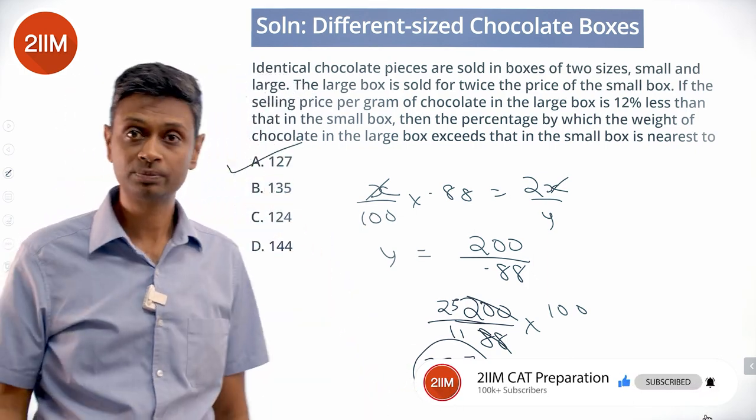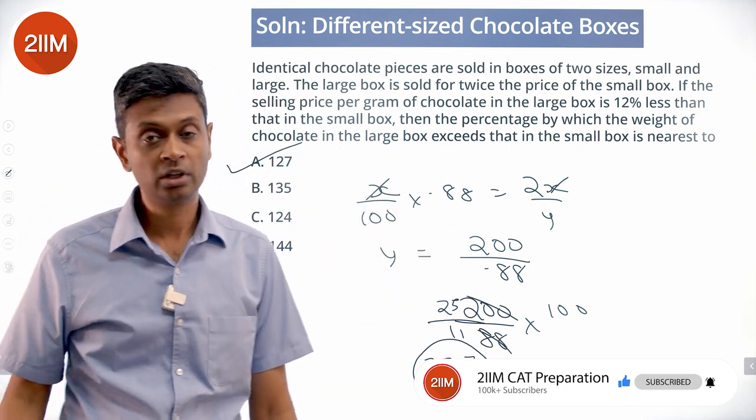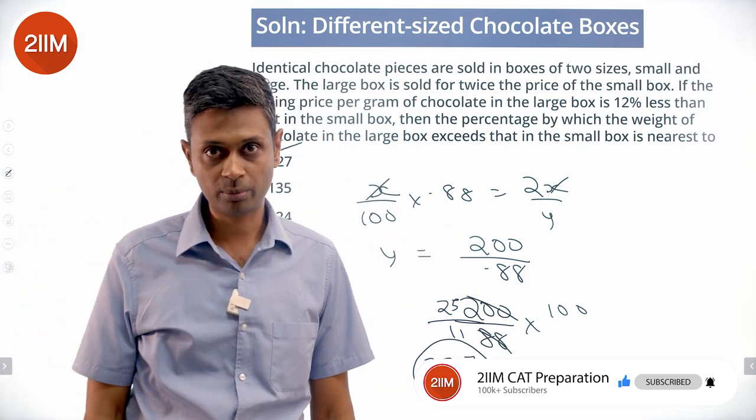Because this is 227 percentage of the weight in the small box, or 127 percent more. From their part, I think they missed a trick by not including 227 in the choices. I would mark that straight away and got a minus one for myself.